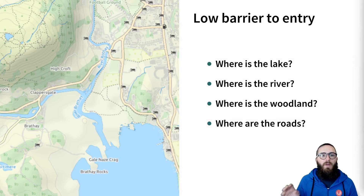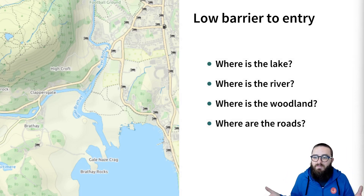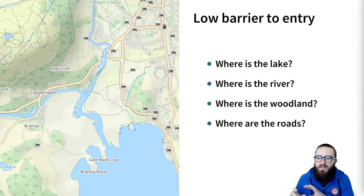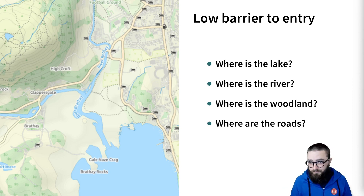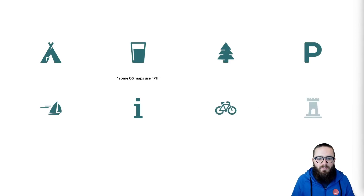So maps have a low barrier to entry, and I'll explain what I mean. If I gave you a map you'd never seen before and asked you to point out a lake, a river, woodlands, or roads, I'm sure many of you would have very little issue in doing so. They use logical colours, shapes, and symbols which reflect the real world. Focusing on symbols for a little bit, I'm sure you can take a very reasonable guess as to what each of these mean, without even looking at the key in the map.